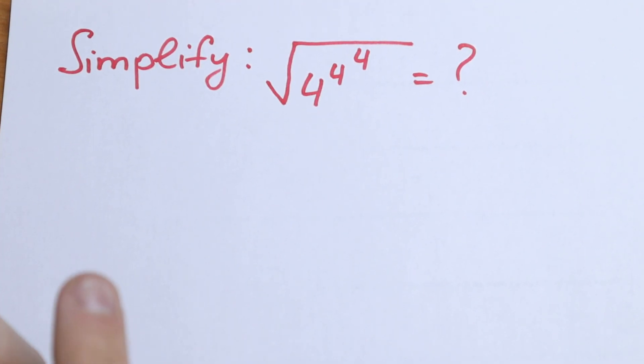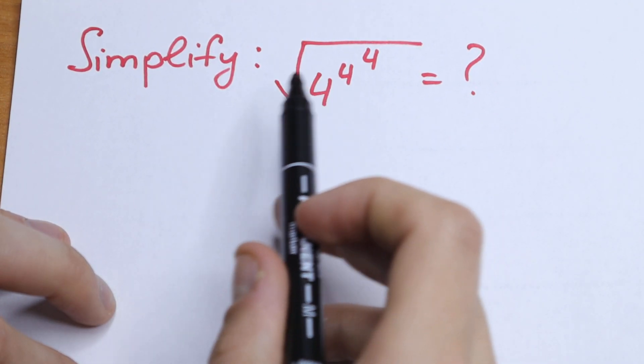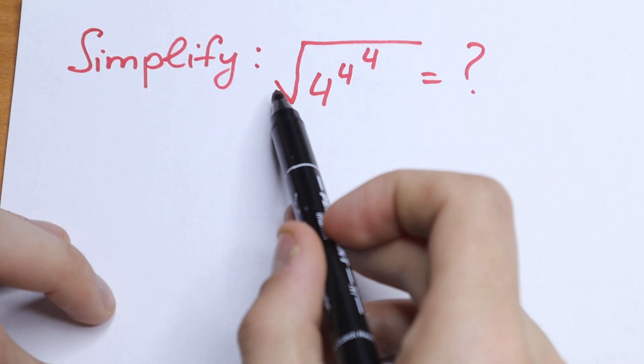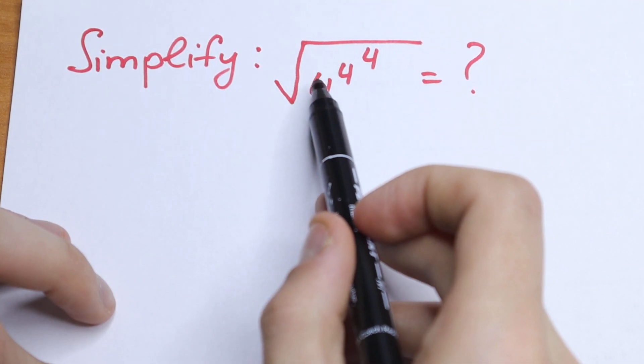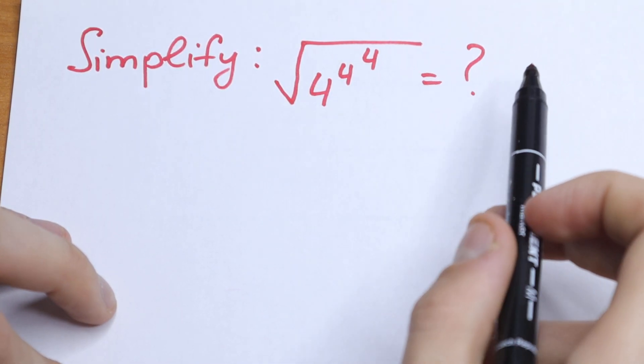Hello everyone, welcome back to MathMood. Today we have an interesting algebra problem. We need to simplify: the square root of 4 to the power 4 to the power 4.